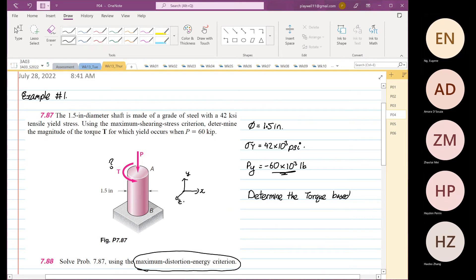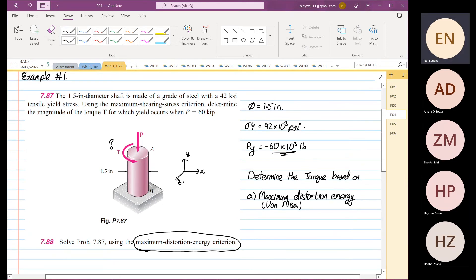What we were asked to do is determine the torque. I'm going to do two approaches. First, I'm going to use maximum distortion energy, which we classify as Von Mises. Then after that, part B, we're going to do the same thing using maximum shear stress criteria, which is based on Tresca.